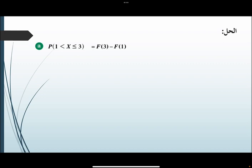الحل: كما شرحنا من قبل، P(1 < X ≤ 3) هي عبارة عن F(3) ناقص F(1)، بمعنى أنه 0.6 ناقص 0.15، يساوي 0.45.